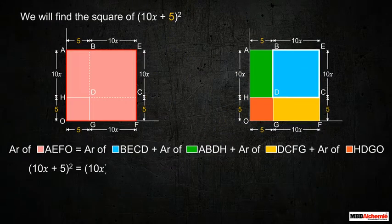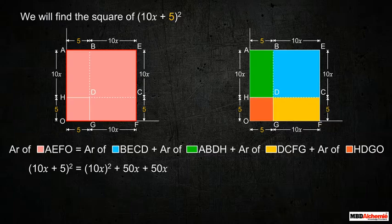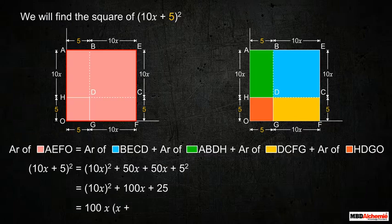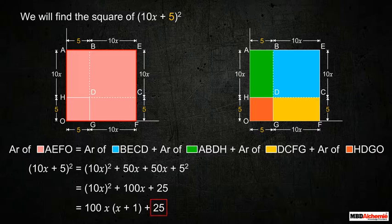The area of square AFO equals the area of square BECD plus the area of rectangle ABDH plus the area of rectangle DCFG plus the area of square HDGO. So, we get (10x)² + 50x + 50x + 5², which equals 100x(x + 1) + 25. The last two digits of the square number must be 25, and the rest of the digits are a multiplication of two consecutive numbers, multiplied by 100.